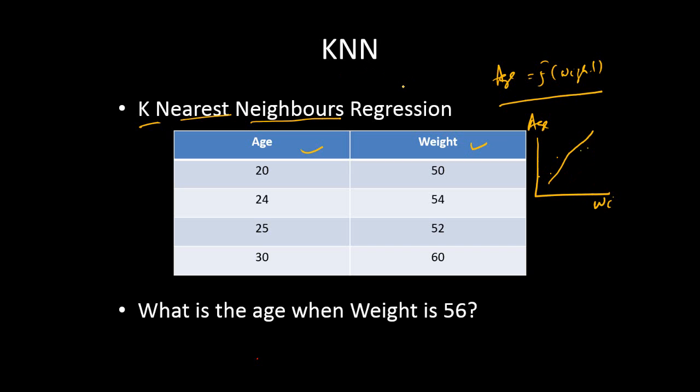It is a lot easier and it is a very simple approach. There is no least square or anything of that sort in KNN. If we want to do a KNN regression, how is that going to be? Let us say we want to directly predict the age of an individual when the weight is 56. Using KNN regression, what is the age of the individual?